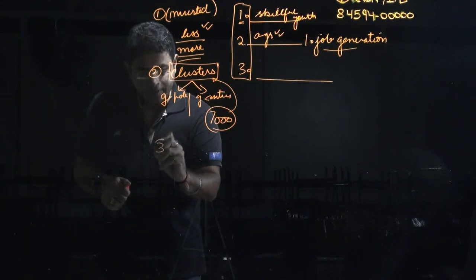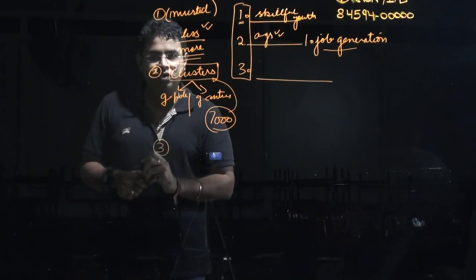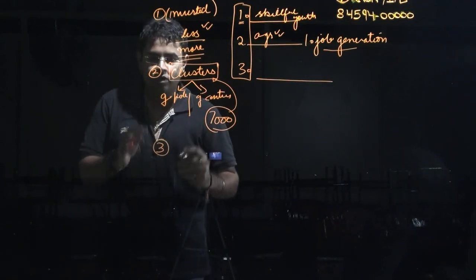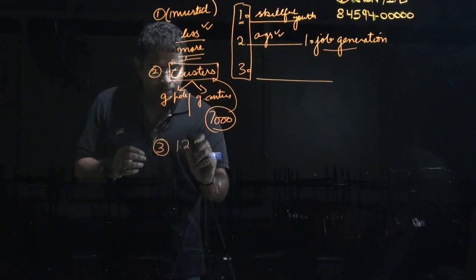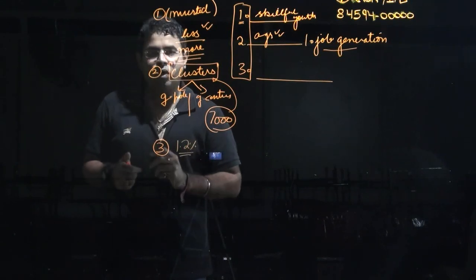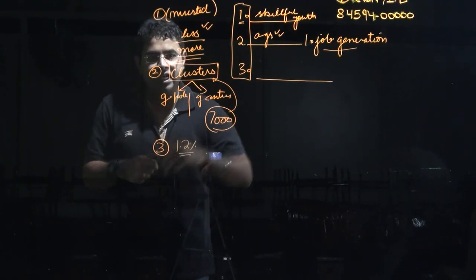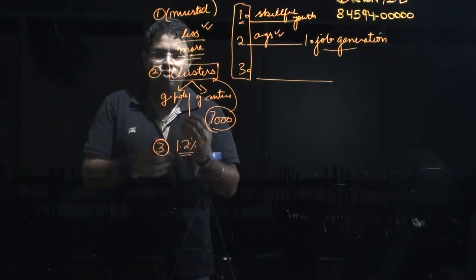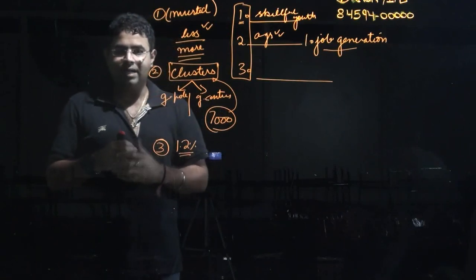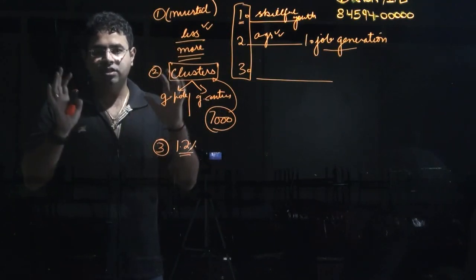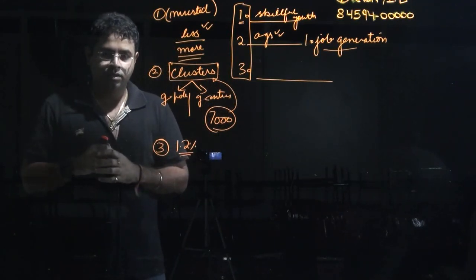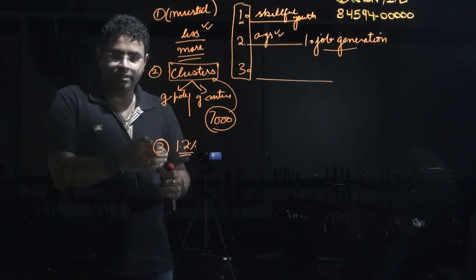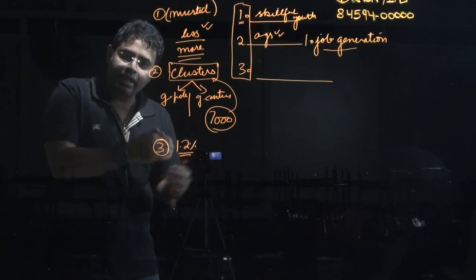The third important thing is to work on different social sectors, particularly health. Currently, the government is spending only 1.2 percent of GDP on health, and this really needs to be increased to 2.5 percent of GDP. This will give a boost to the health sector, improve the overall health and nutrition of citizens, and also add significantly to employment.